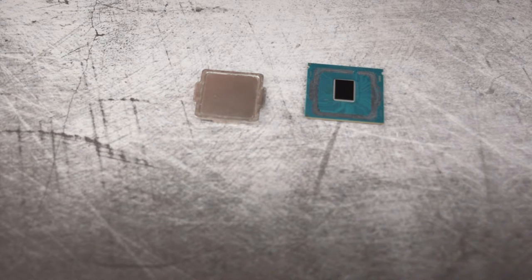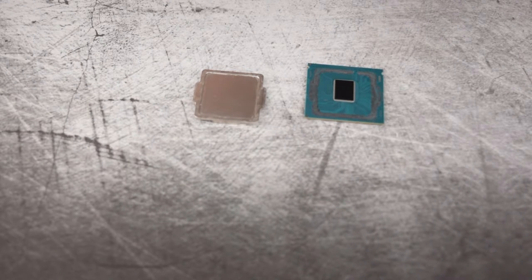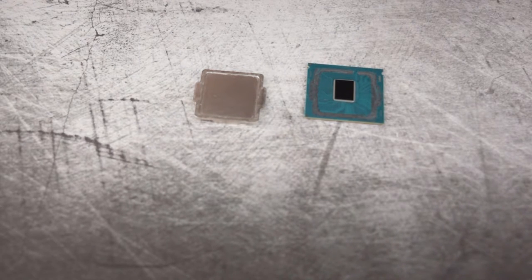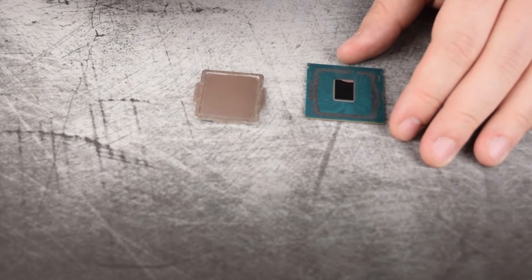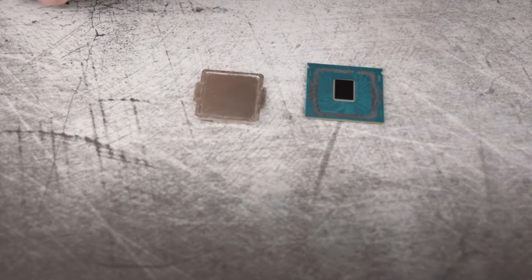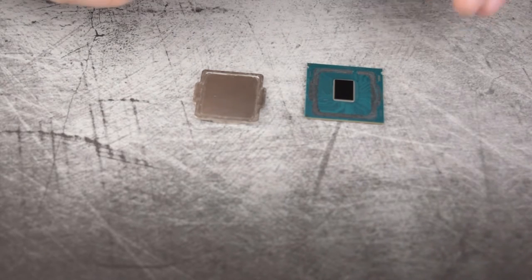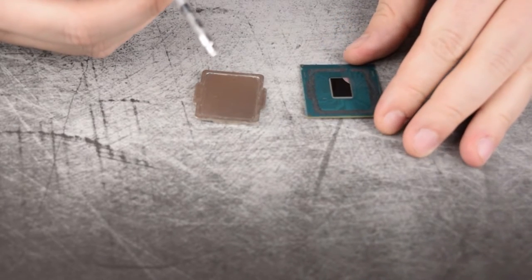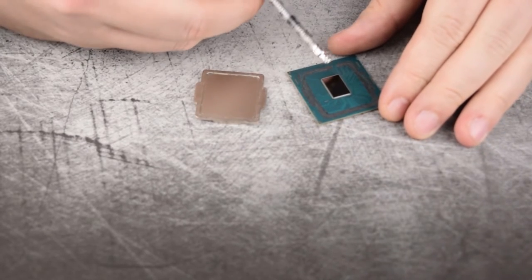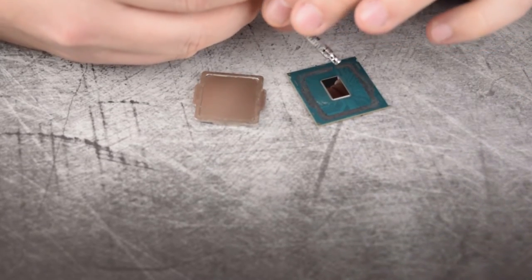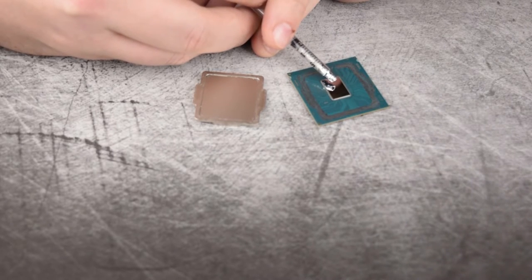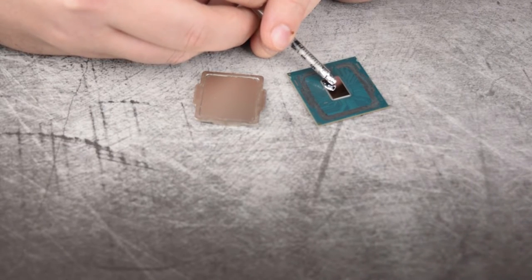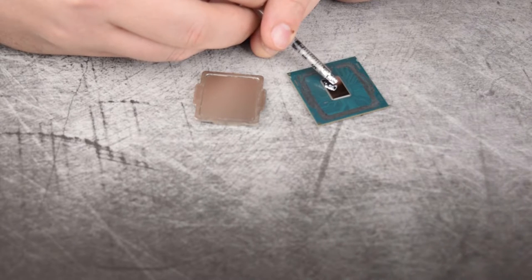The next thing that we're going to do now that we have it clean is we're going to go ahead and apply some liquid metal. This particular liquid metal is from a company called Kool Laboratory. I will link it in the description. One thing that you want to keep in mind while applying this is that a little bit does go a long way. You don't want to sop it all over the chip. But you do want to get enough so that you know you're going to make contact.